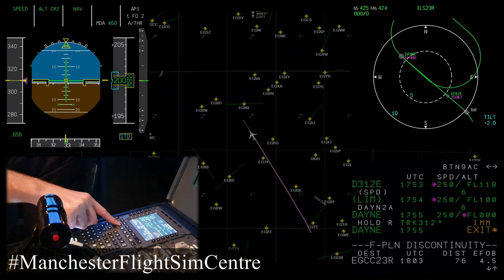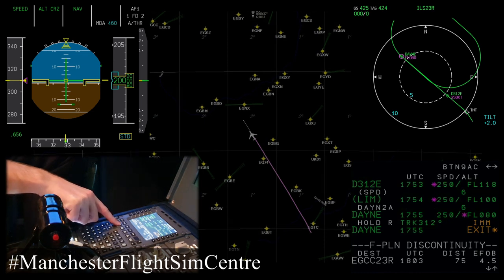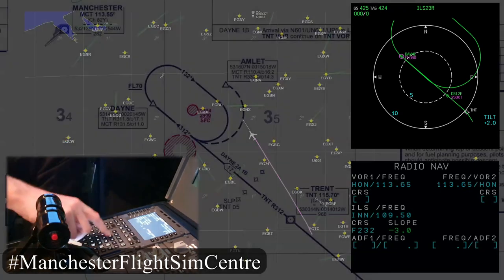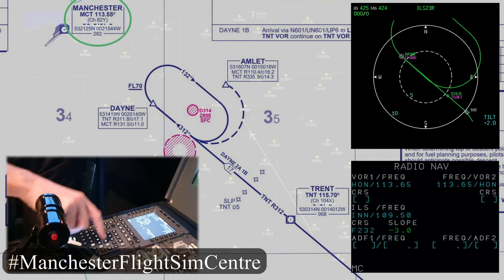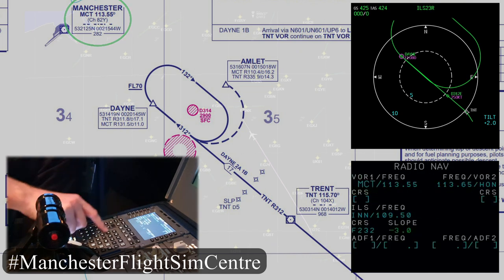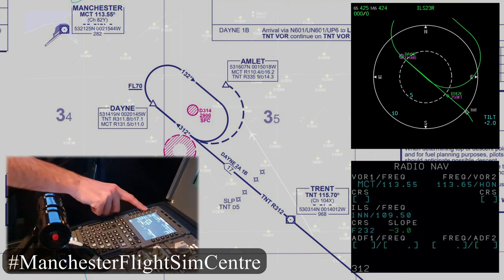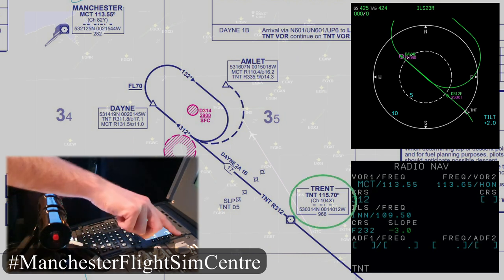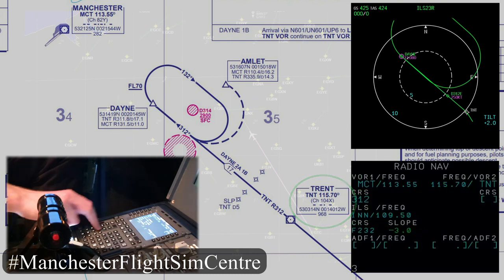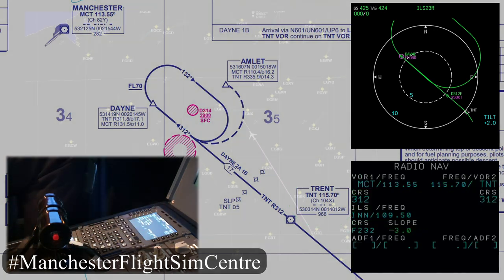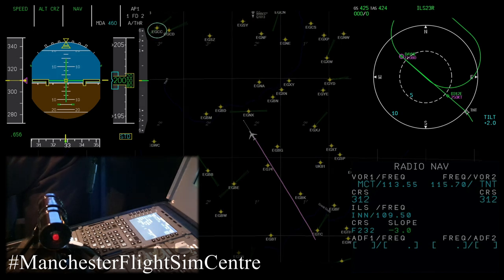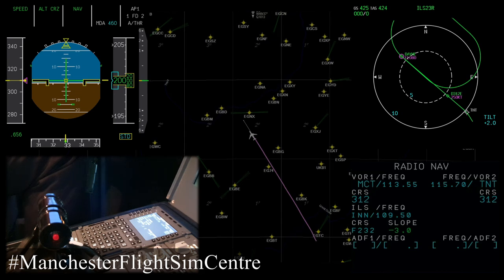A little bit of airmanship to consider: we've inserted a hold at Dane, so let's consider appropriate radio navigation aids to back that up. Today I'm going to select Manchester — Mike Charlie Tango — on VOR1 with a course of 312 degrees. And for VOR2, I'm going to select Trent, again with 312 degrees. We are within 250 miles of Manchester, and an ILS is in the FMGC, so the ILS frequency has automatically tuned and is correct.